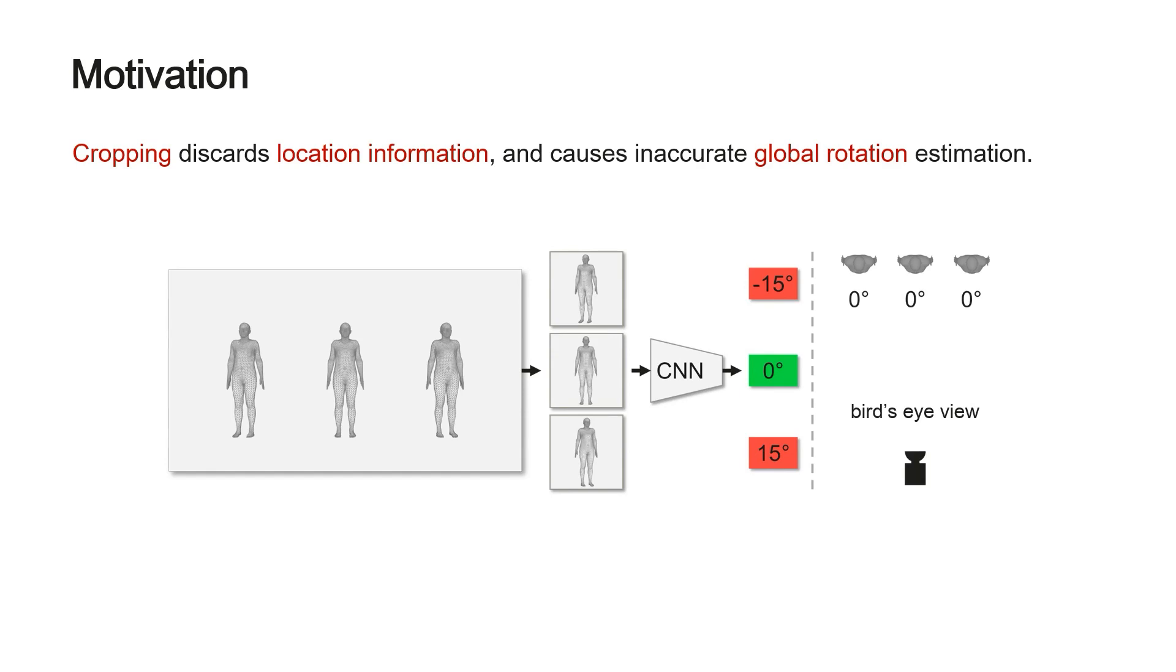As a result, the 2D reprojection loss calculated in the cropped images is not a proper supervision. In other words, missing the location information introduces extra ambiguity.